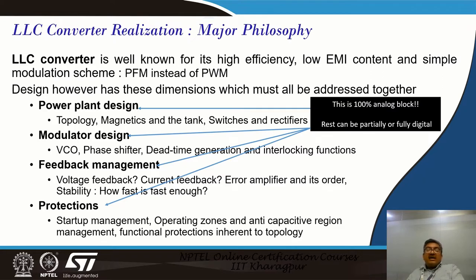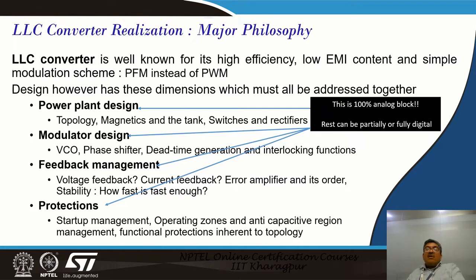Not one single dead time setting is good for the entire operating range over line and load. This is why digital control comes into picture — with analog control it is not easy to provide much adjustment in dead time. Some analog controllers do have adaptive dead time, but the digital controller clearly wins here because in digital control we can always predict and control the dead time dynamically depending on the instantaneous load condition. This is a major advantage of digital control — the flexibility of adjustable and continuously adaptive dead time, which greatly enhances efficiency.